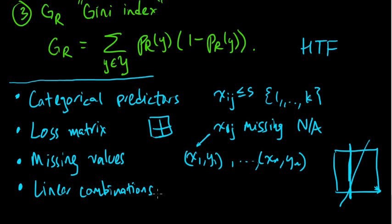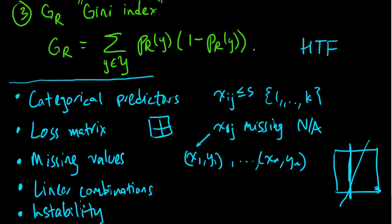Especially when you combine CART with the aggregation techniques we're going to talk about next. One last thing leading to those aggregation techniques: there's instability in these trees in the sense that a very small change in your dataset could result in a very drastic change in the resulting tree. This sensitivity to the data makes the resulting tree have high variance as an estimator, which generally leads to lower performance. But there's a fantastic way to mitigate this using aggregation — and that's what we'll talk about next.